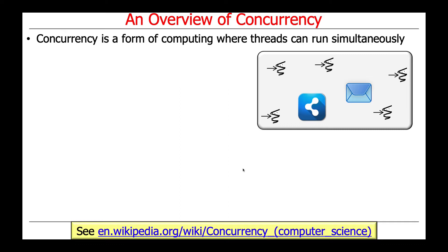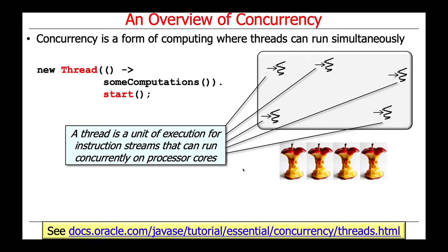Concurrency is a form of computing where two or more threads can run simultaneously. A process is a unit of resource allocation and protection — represented by a gray rounded rectangle. Within a process there can be one or more threads, which are the units of execution. A thread is a unit of execution for streams of instructions that can run concurrently on one or more processor cores.